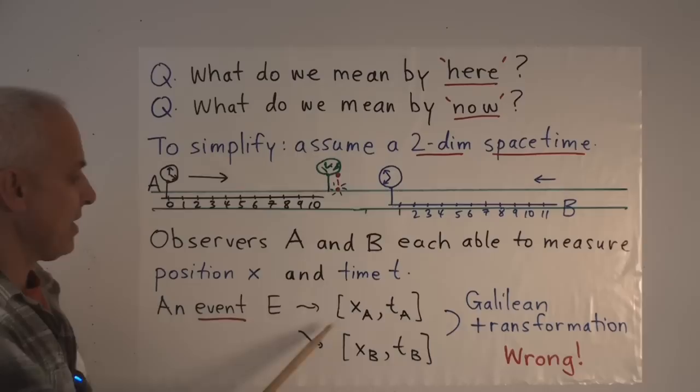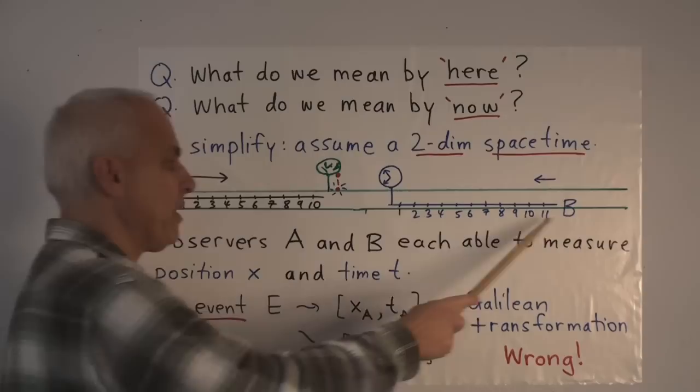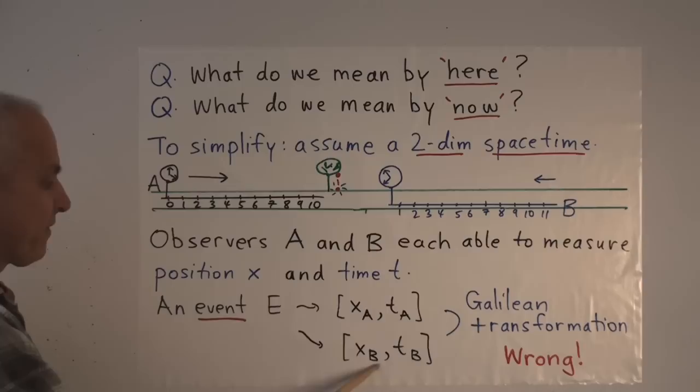The event is going to be measured by observer A. He's going to say, well, that happened at a certain position, called X sub A, and at a certain time, T sub A. While the observer B, she's going to say, I observe it happening at a different position and at a different time.